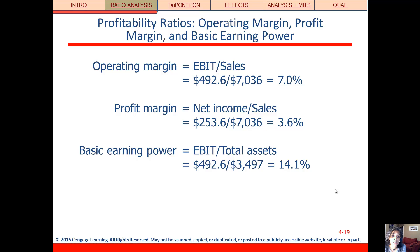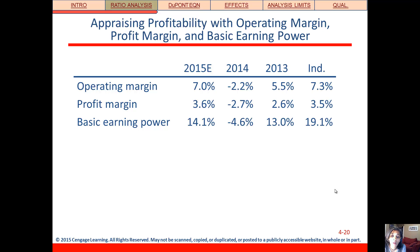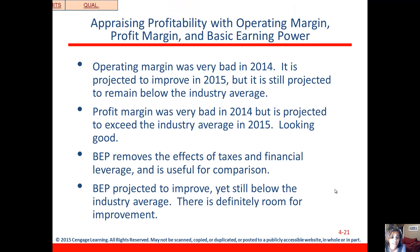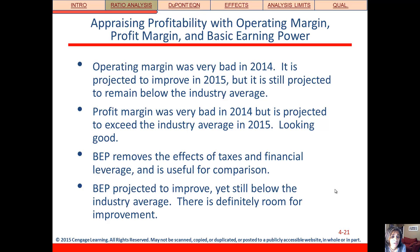Moving on to profitability: operating margin is operating income divided by sales, profit margin is net income divided by sales, and basic earning power (BEP) is operating income divided by total assets. They're all on the upswing, but except for profit margin, they're all a little bit lower than the industry. Profit margin is really the only one that's looking good. Basic earning power takes away the impact of taxes and debt, which helps us compare without those distractions. It's on the upswing but still below the industry average, so they've got some problems when it comes to profitability.